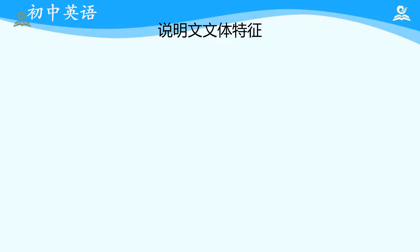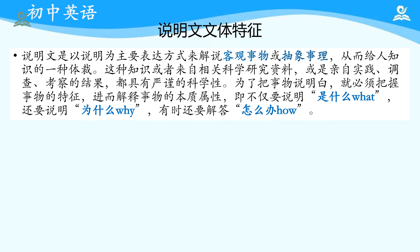说明文的文体特征，大家都做过很多题目，可以称得上是有经验的阅读者。相信这些似曾相识的文字一定可以印证你头脑中关于说明文的某些印象。说明文是以说明为主要表达方式，来解说客观事物和抽象事例，从而给人知识。这种知识可能来自于科学研究资料，也可能是亲自实践、调查和考察的结果，都具有严谨的科学性。